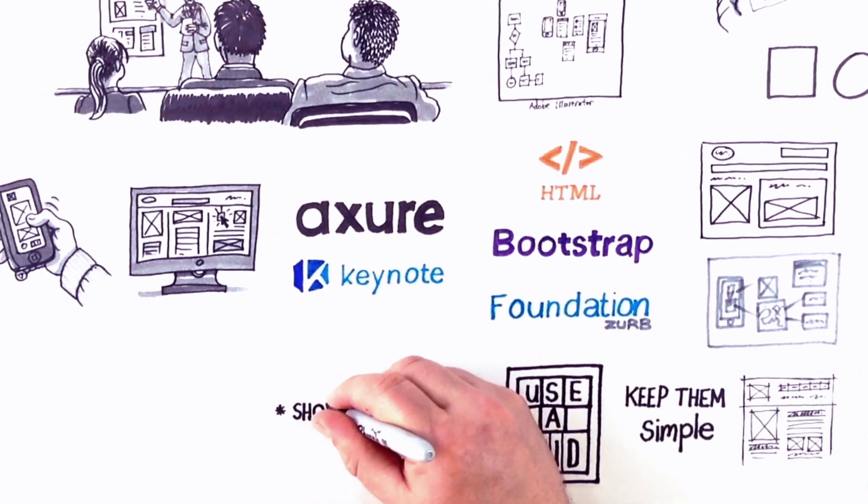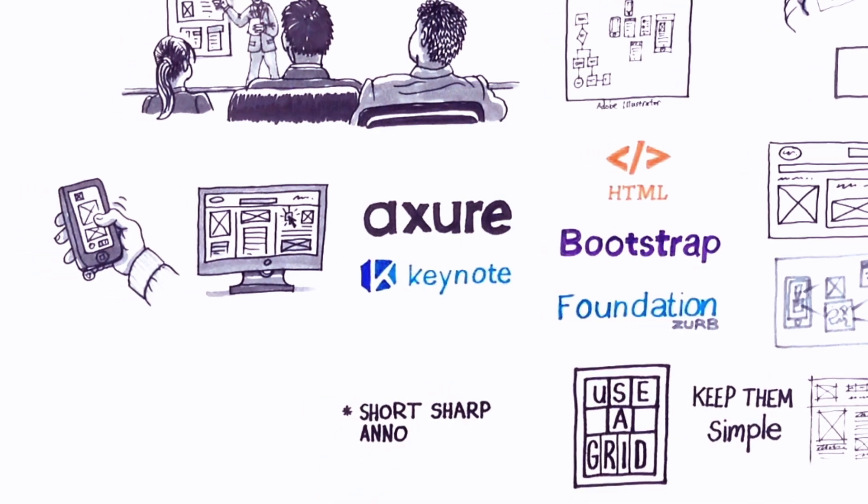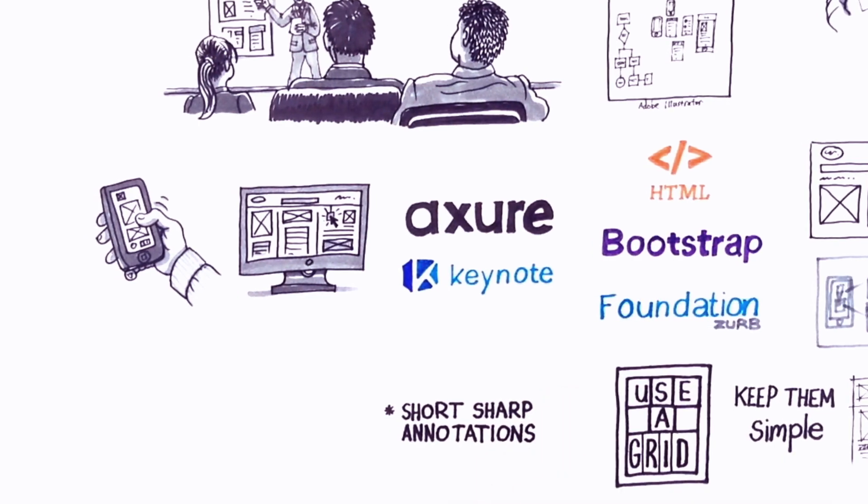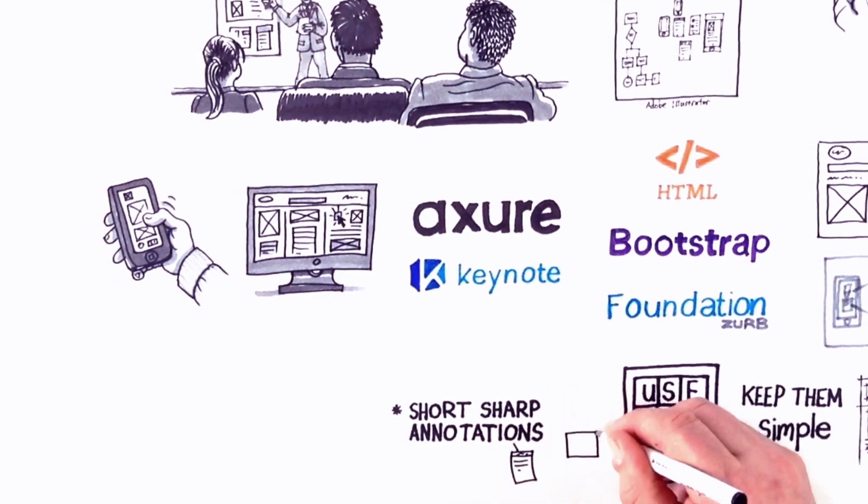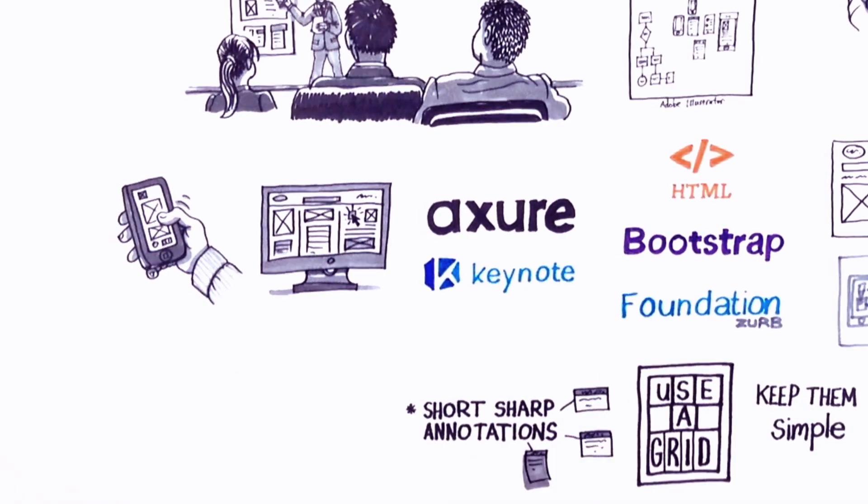Three, use short, sharp annotations. Unlike a 50-page functional spec doc, team members actually read wireframes more than any other document. So make sure you keep adding some annotations to your wireframes. Don't go overboard though. Keep them brief and to the point.